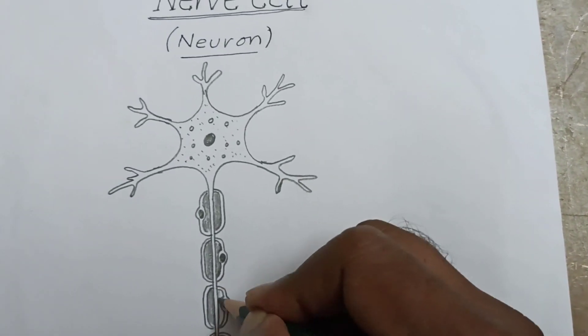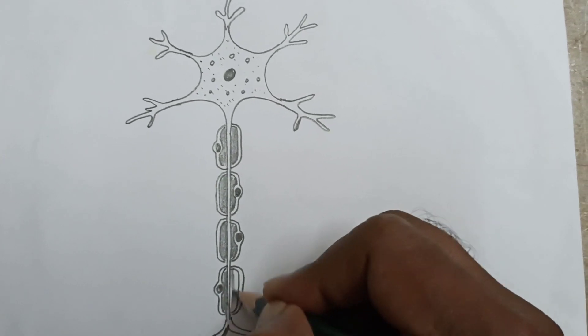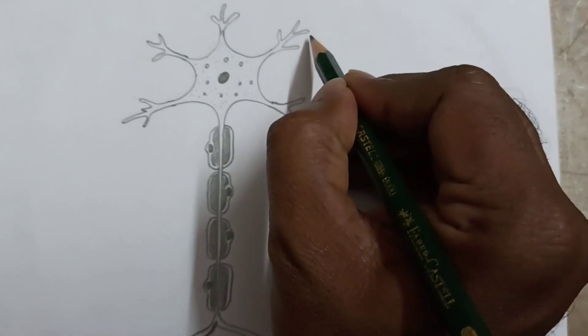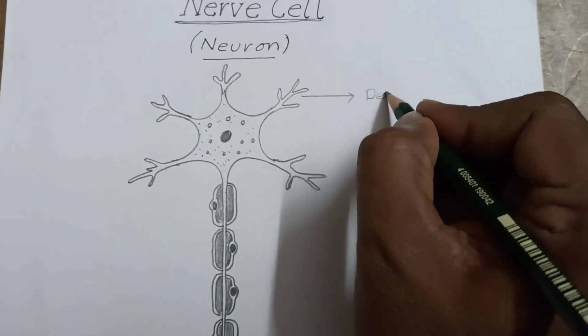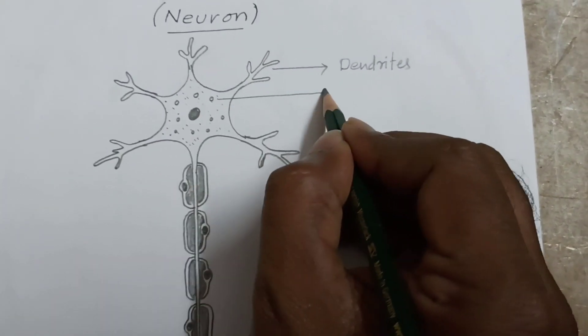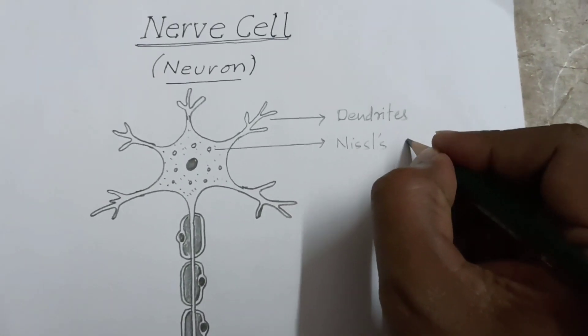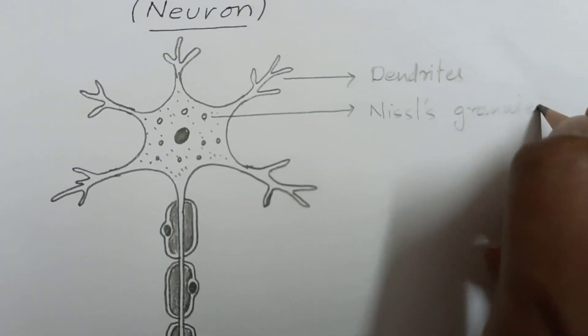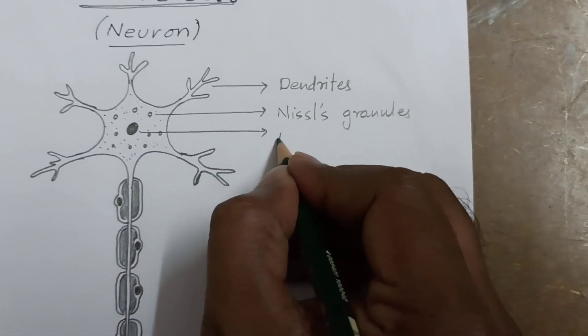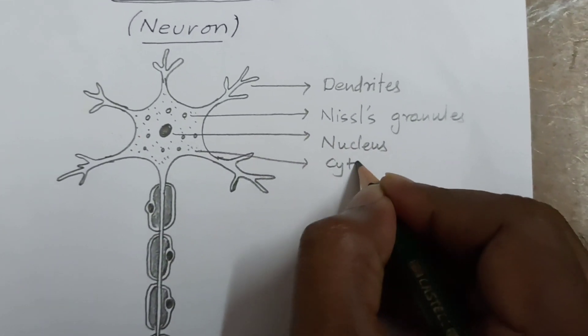Cytoplasm almost completed. Now it's time for labeling. These are dendrites, cytoplasm. These are Nissl granules, this is nucleus, this is cyton or cell body.